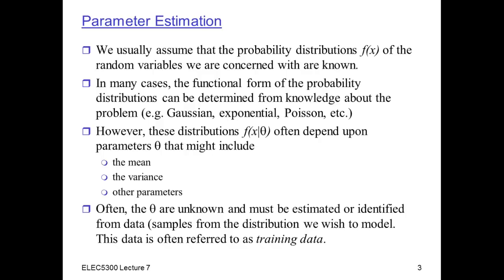Up to now, we've usually assumed that the probability distributions of the random variables that we're dealing with are completely known. In other words, we know both the functional form — for example, Gaussian, exponential, Poisson — and we know all the parameters of that distribution. For example, in the Gaussian distribution, we might need to know the mean and the variance. In the exponential distribution, we might just need to know the mean.